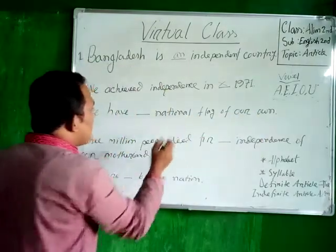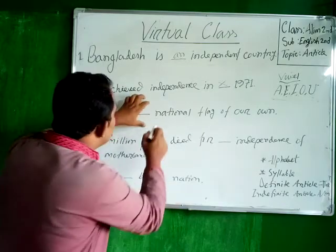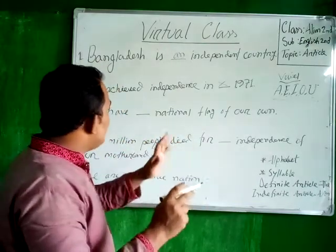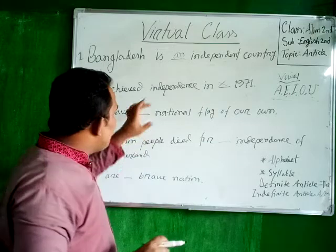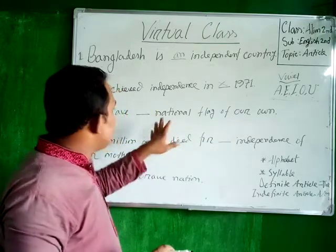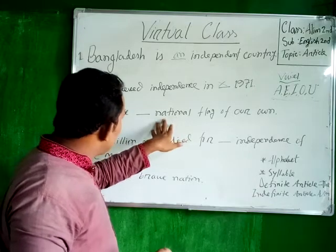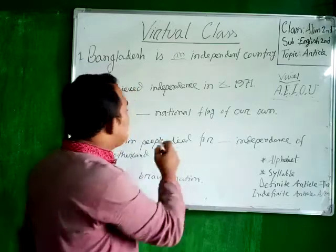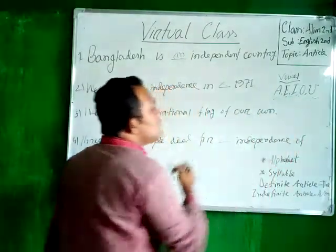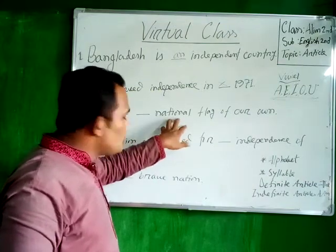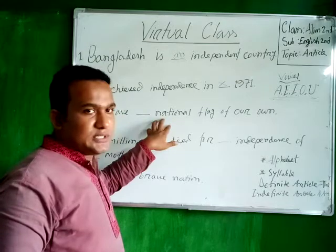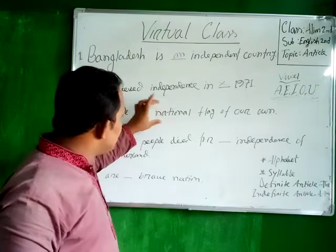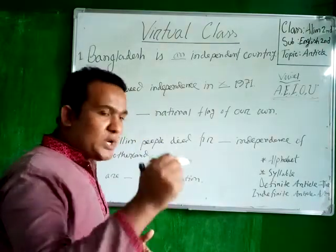Here you can see the word 'national'. We need to decide which article goes before 'national'. If I pronounce the word 'national' — there are syllables. The beginning syllable of 'national' is 'na'. The very first sound of the word is 'ne'. Checking A-E-I-O-U — there is no vowel sound at the beginning of this word. It is a consonant sound. So if a word starts with a consonant sound, you have to put article 'a'.